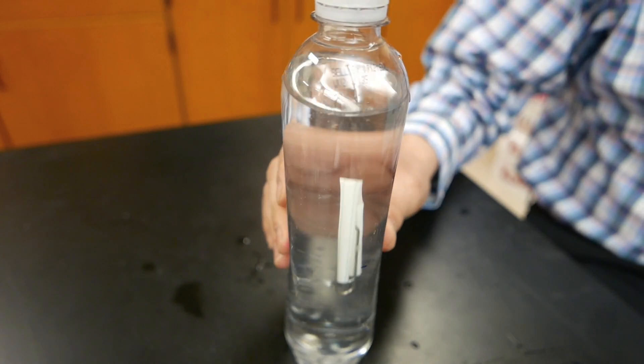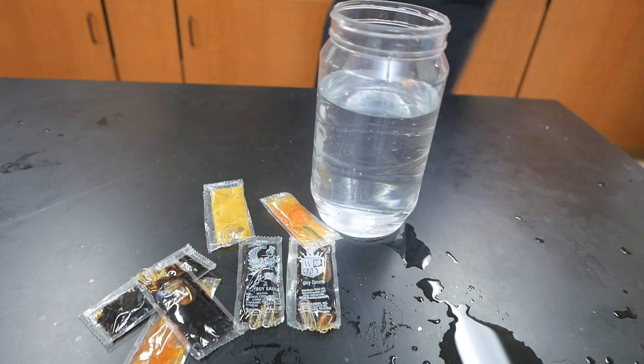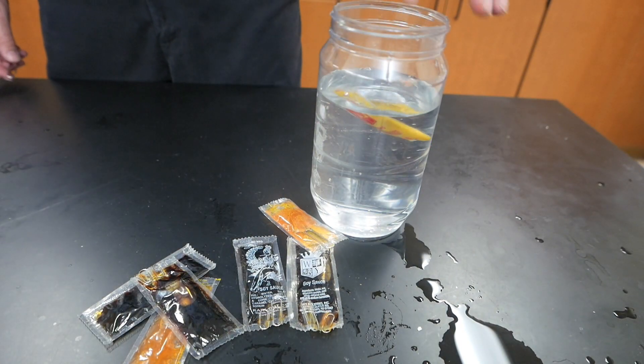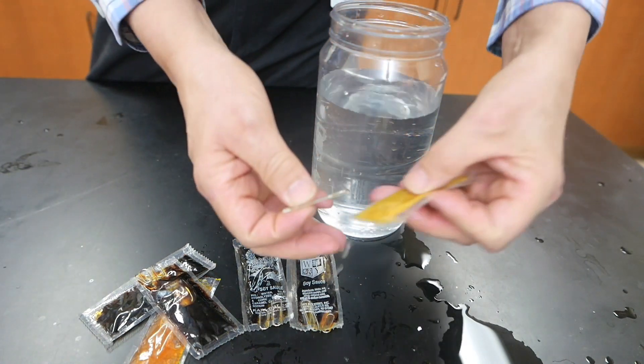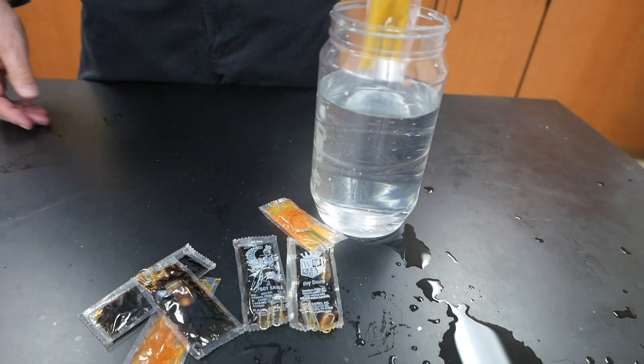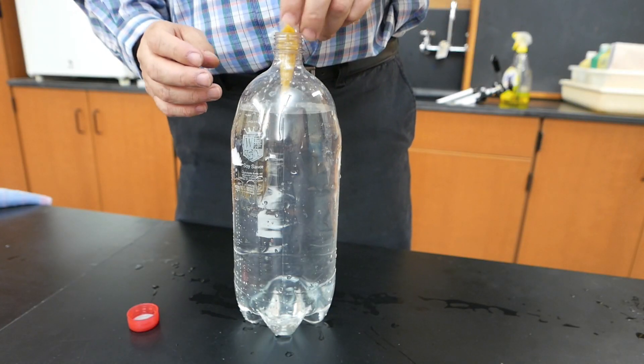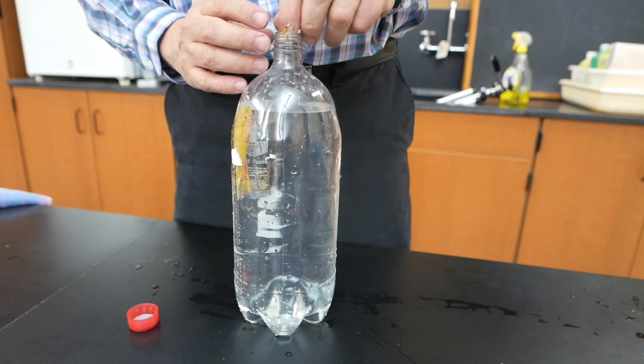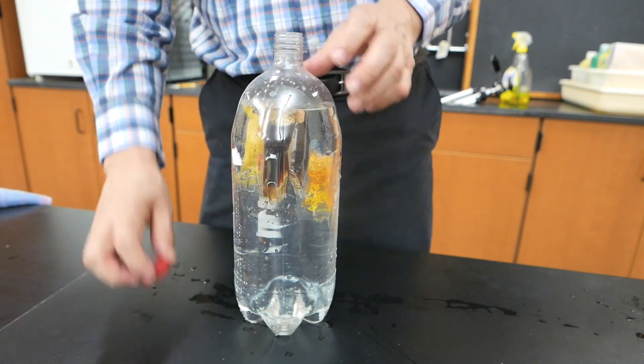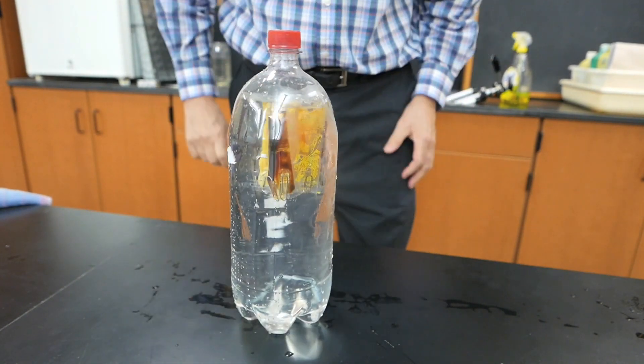This diver is about as simple as it gets. Another popular diver has been condiment packets. Mustard, ketchup, soy sauce. Just stick it into water, see that it floats, and then add a paper clip or two to adjust its weight so that it just barely floats. Then stick it in a bottle, or a couple of them. There we go. Cap it. And squeeze.